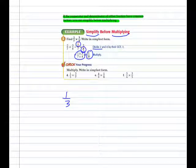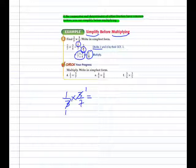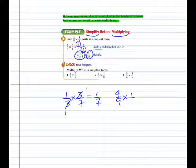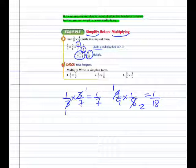Example D: one-third times three-sevenths. We can divide both threes by three, giving us a one in each place, so our answer in simplest form is one-seventh. Example E: four-ninths times one-eighth. The four and the eight have a common factor of four. Four divided by four is one; eight divided by four is two. One times one is one as the numerator; nine times two is eighteen as the denominator. So four-ninths times one-eighth equals one-eighteenth.